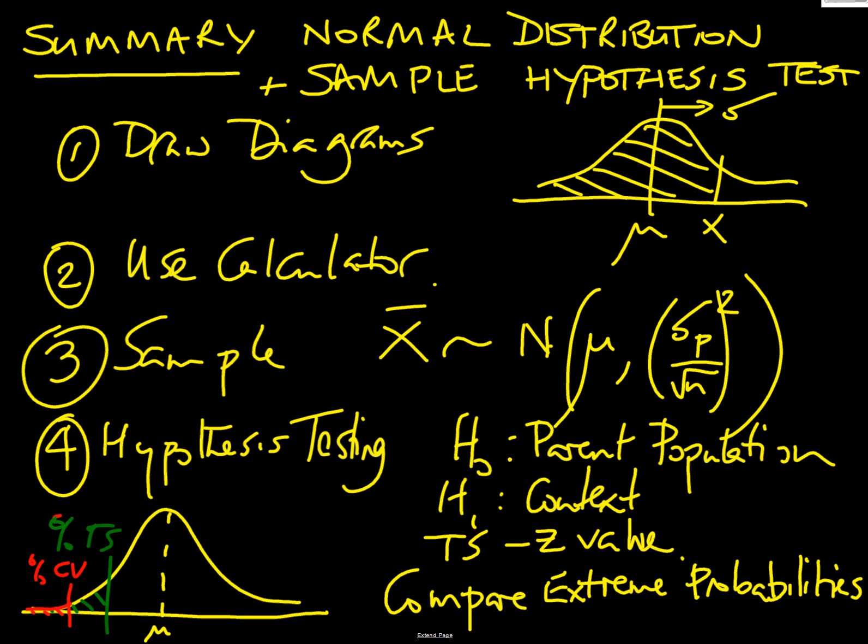Here's my little summary of normal distributions and sample hypothesis test. Please do draw a diagram. Do use your calculator. Remember, if you're working with the sample, the distribution of the sample has the same mean mu, but its standard deviation is sigma of the population over root n. Then you're going to use those stats to do the rest of the calculation. In the hypothesis testing, you're going to assume that all of this is part of the parent population, nothing's changed. Your H1 is then going to depend on your context. Your test statistic is going to be your Z value from your test sample, usually your X bar. You're going to be looking for the probability that goes with that, and then you're going to compare it with the critical value. You're going to look at the extreme probability. So it's going to be less than if you're on the left hand tail or greater than if you're on the right hand tail.